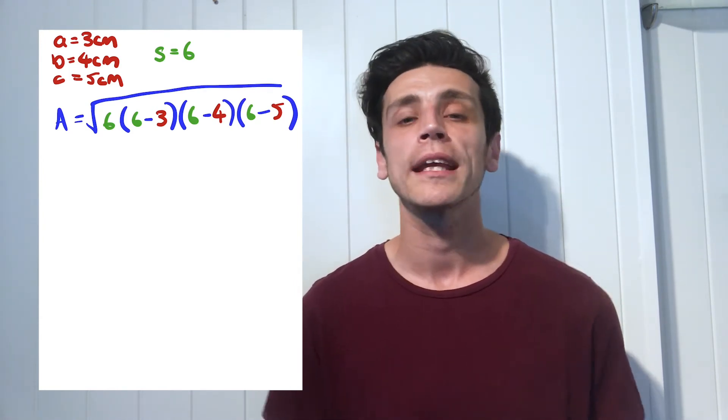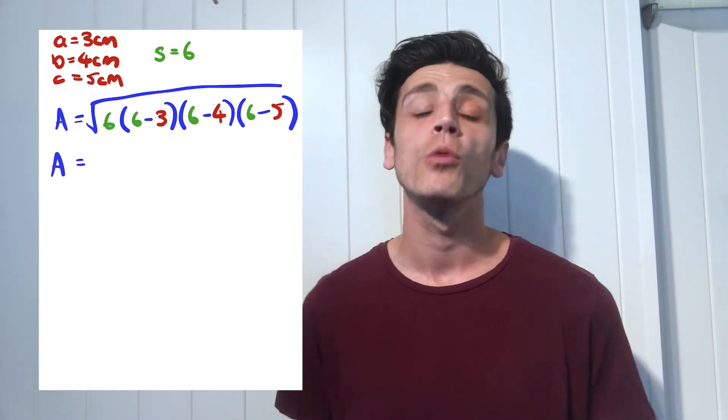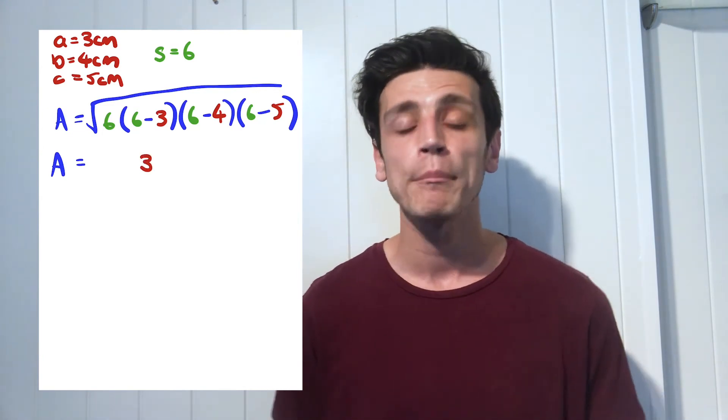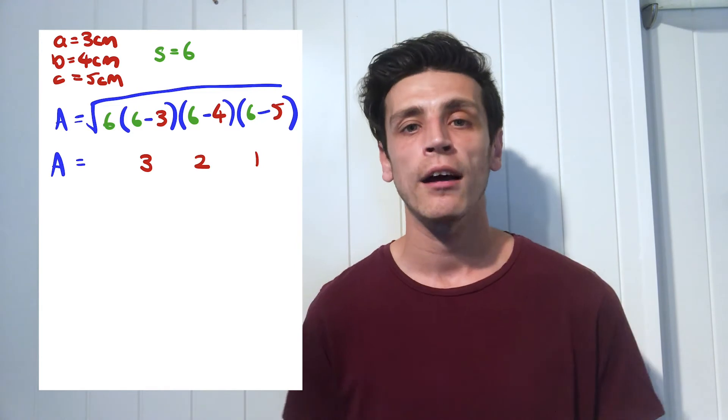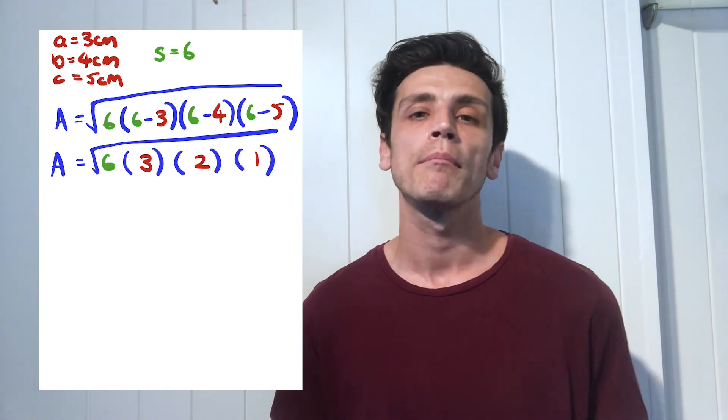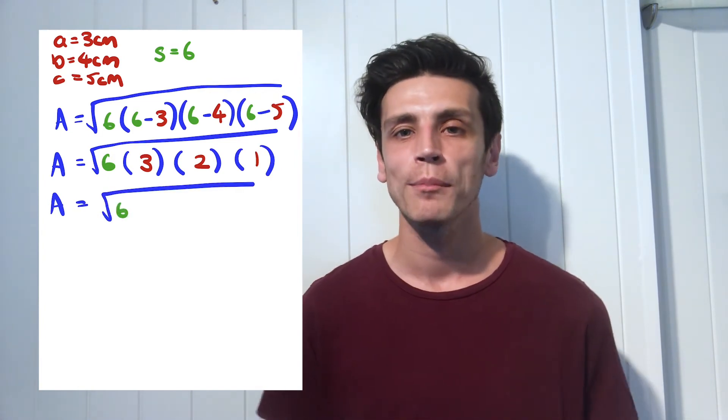So six minus three would give me three, six minus four would give me two, and six minus five would give me one. And because these are all multiplying, our formula is now going to read as the square root of six multiplied by three multiplied by two multiplied by one.